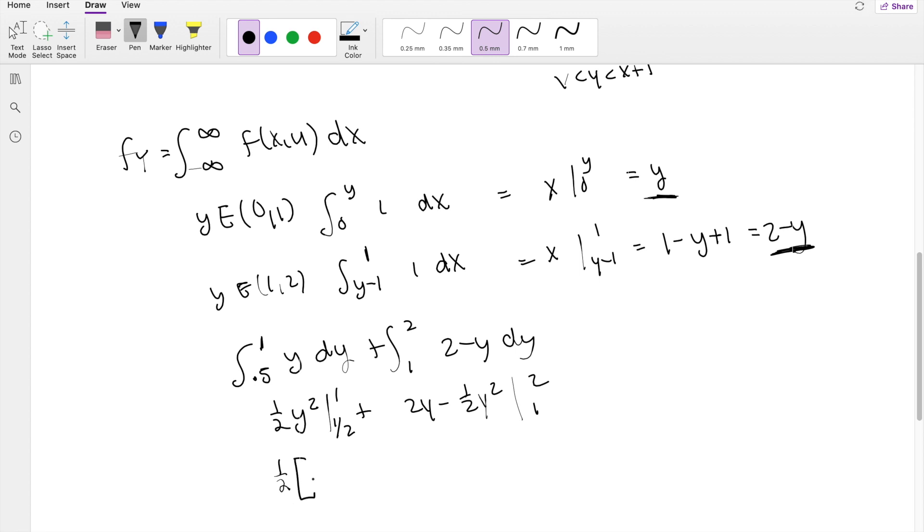So you get 1/2 times 1 minus 1/4, plus this one right here is going to be 4 minus 2 times 2 is 4, 4 over 2 is 2, minus 2, plus 1/2.